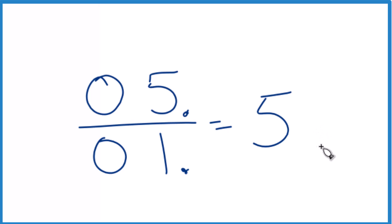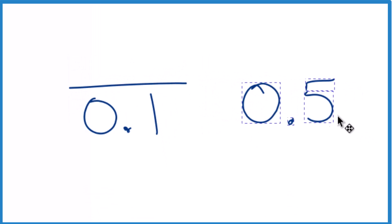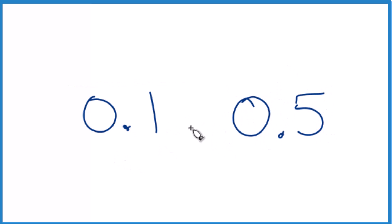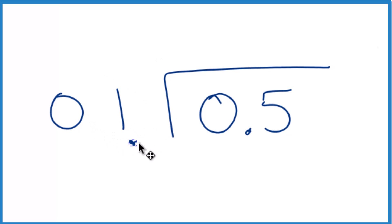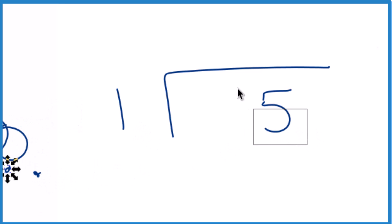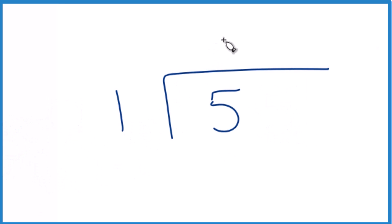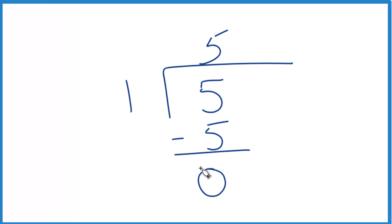Another way we can do it, and we'll get the same answer, is like this. We take the 0.5 and divide 0.5 by 0.1. Again we're going to move those decimal points over — we'll move this one over here and here. Now we're just seeing how many times 1 goes into 5. So we can get rid of these zeros and the decimal points. 5 times 1 equals 5, subtract, no remainder. So again, 0.5 divided by 0.1, we end up with an answer that is 5.